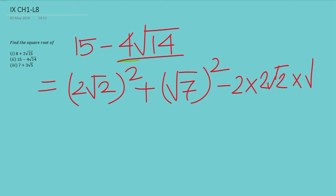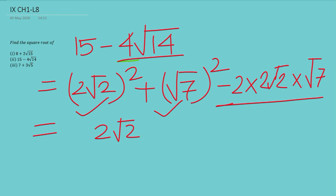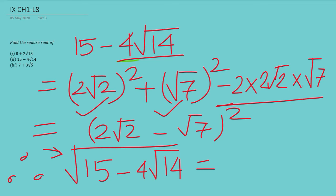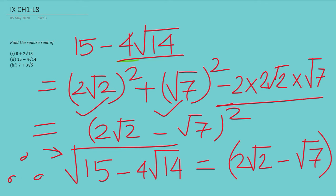So it is in the format of a² + b² − 2ab, and hence we can write it as (2 root 2 − root 7)². Therefore the square root of 15 − 4 root 14 is equal to 2 root 2 − root 7. This is a positive square root, so we also have the negative, giving ± (2 root 2 − root 7).